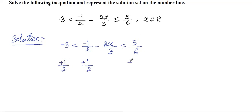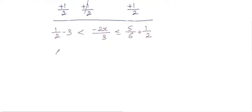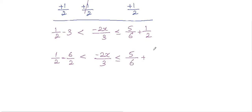Just add one-half on all three sides. We'll get: one-half minus three, less than minus two X divided by three, less than or equal to five-sixths plus one-half. Now take the LCM and simplify. Two is the LCM on the left side, giving us negative six over two. On the right, the LCM is six, so five-sixths stays as is and one-half becomes three-sixths.